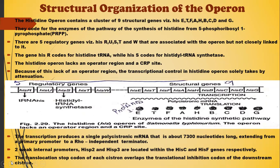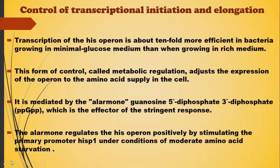There are also two weak internal promoters, hisP2 and hisP3, located within the hisC and hisF genes respectively. The translational stop codon of each cistron overlaps the translational initiation codon of the downstream cistron. Now, talking about the control of transcriptional initiation and elongation.